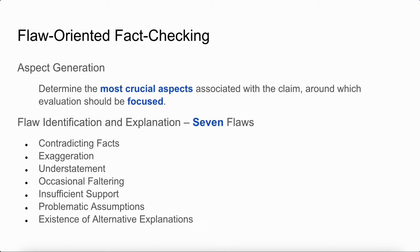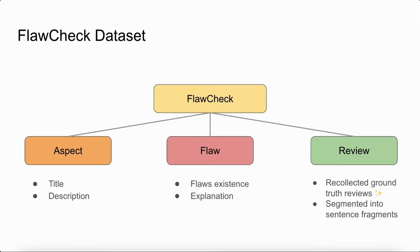As a result, we propose a flaw-oriented fact-checking task which consists of two parts. First, aspect generation determines the aspect level that evaluation should be focused on. For flaw identification and explanation, we define seven crucial flaws from false labels used by various fact-checking organizations. To facilitate this task, we introduce the flaw-checked dataset with aspect, flaw, and review article.